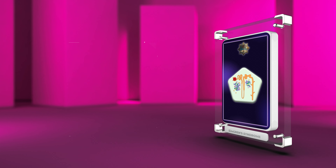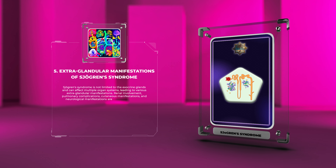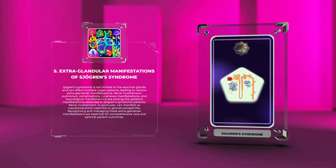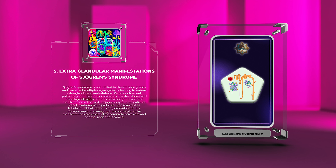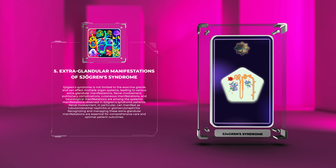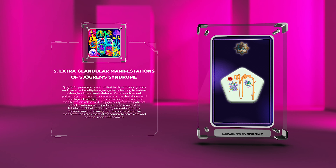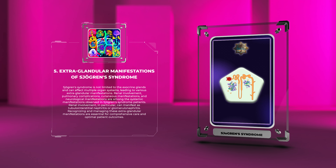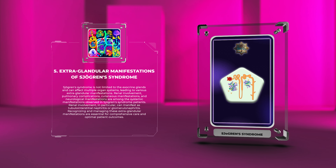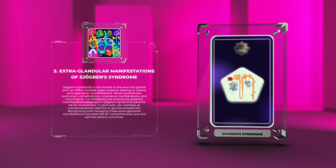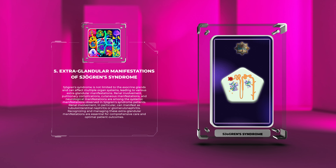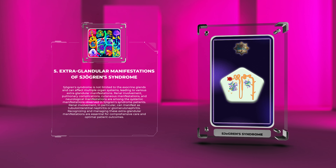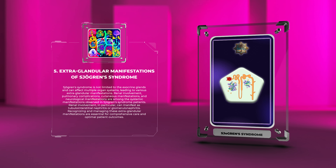Sjogren's Syndrome is not limited to the exocrine glands and can affect multiple organ systems, leading to various extra-glandular manifestations. Renal involvement, pulmonary complications, cutaneous manifestations, and neurological manifestations are among the systemic manifestations observed. Renal involvement in particular can manifest as tubulointerstitial nephritis or glomerulonephritis. Recognizing and managing these extra-glandular manifestations are essential for comprehensive care and optimal patient outcomes.